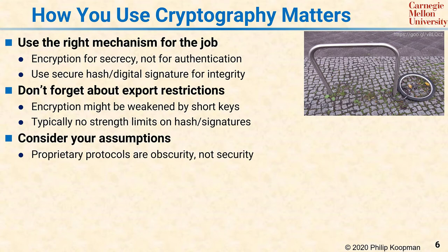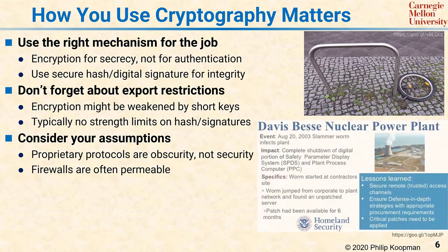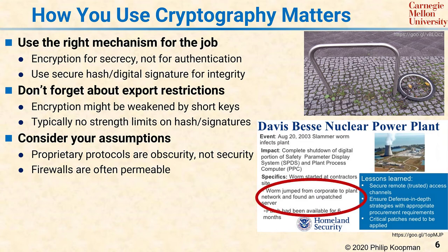Consider the assumptions you're making for security. It is dangerous to assume that you are secure simply because you're using a proprietary network protocol. Network protocols are fairly easy to hack. Here's an example of someone who hacked a proprietary car network protocol — they were able to forge messages on a controller area network CAN bus that let them send fake speed signals to the dashboard and in general raise a lot of havoc. Even if physical access to the network seems unlikely, firewalls often have problems as well. For example, the Davis-Besse nuclear power plant was attacked by the Slammer internet worm in 2003 because of an unauthorized connection that bypassed the firewall.